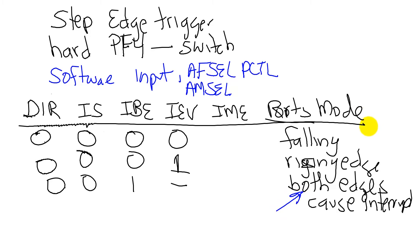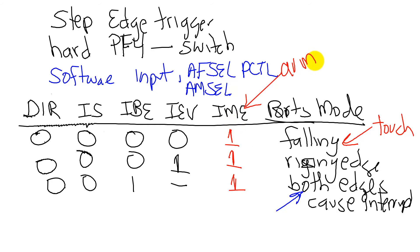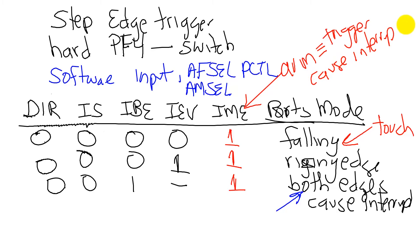But the mode we're going to use is the falling edge mode, because we want just a touch to cause an interrupt. The IME bit will be set to one, and that says once you see the trigger, cause an interrupt. The idea of arm is the trigger will cause an interrupt. So the mode we're going to use is this one.